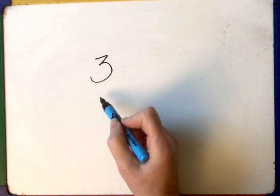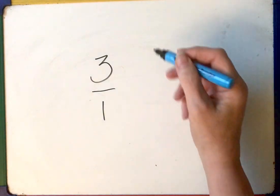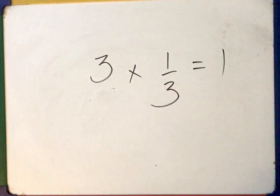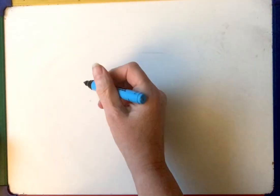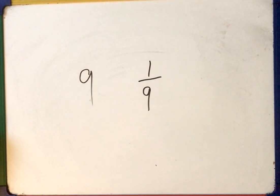Here's another one for you to do quickly. What's the reciprocal of three? A very good strategy is to imagine that three is actually three over one, because that gives you three. Flip that upside down and it's a third. Three times a third equals one — three lots of a third is one. So the reciprocal of three is a third. What's the reciprocal of nine? Hopefully you know that the reciprocal will be one over nine.